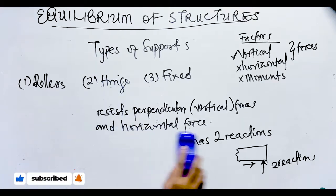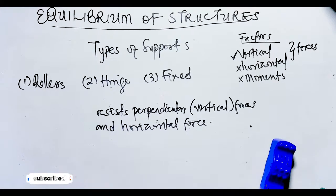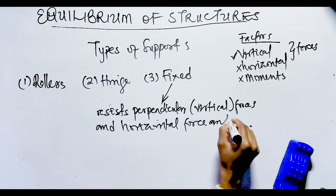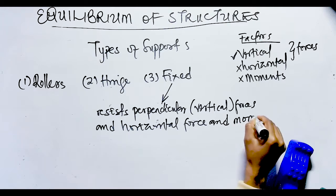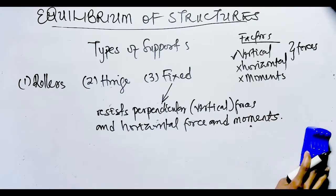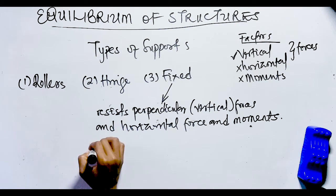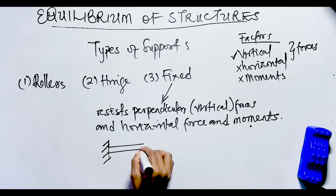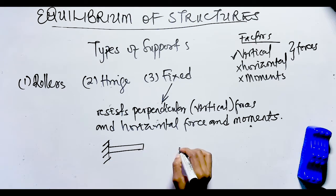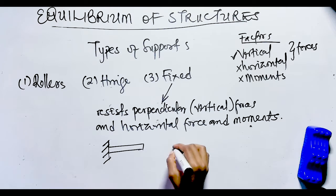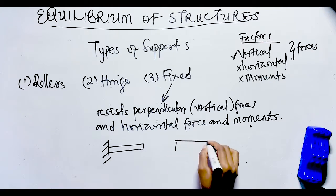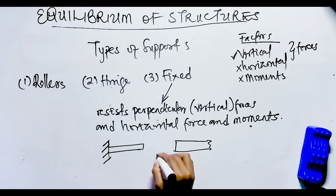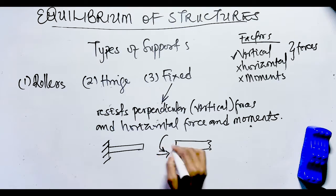Last but not least, we have fixed supports, also known as rigid supports. They are restrained against both rotation and translation, so they can resist any type of force or movement. Fixed supports can resist moments, vertical forces, and horizontal forces, meaning they have three reactions. A very clear example is a beam fixed in a wall.